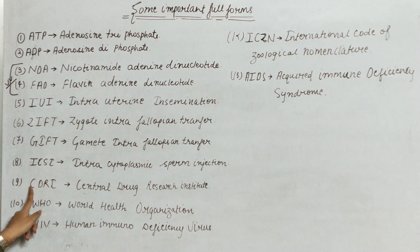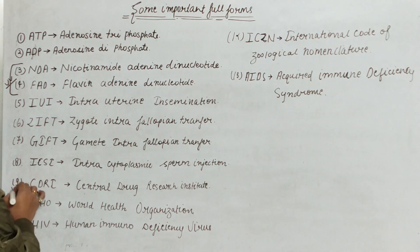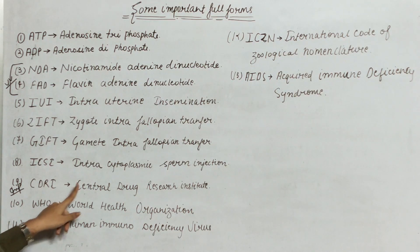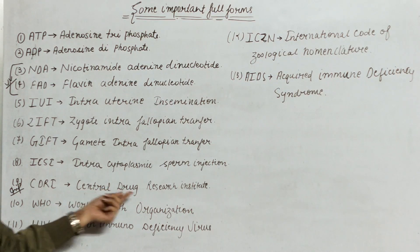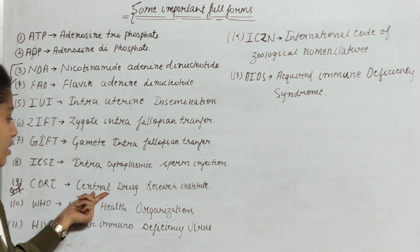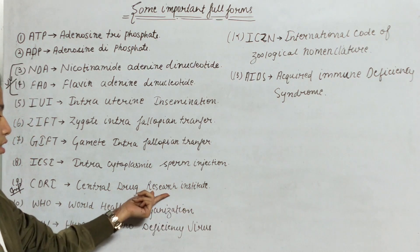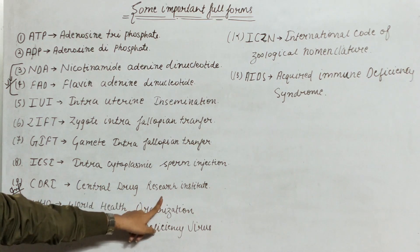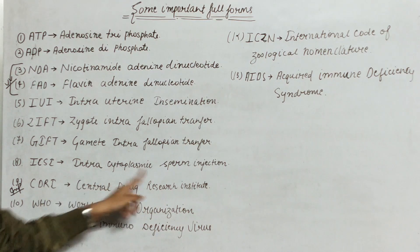Next is CDRI — this is also important, the ninth number. CDRI full form is Central Drug Research Institute. C from Central, D from Drug, R from Research, and I from Institute.